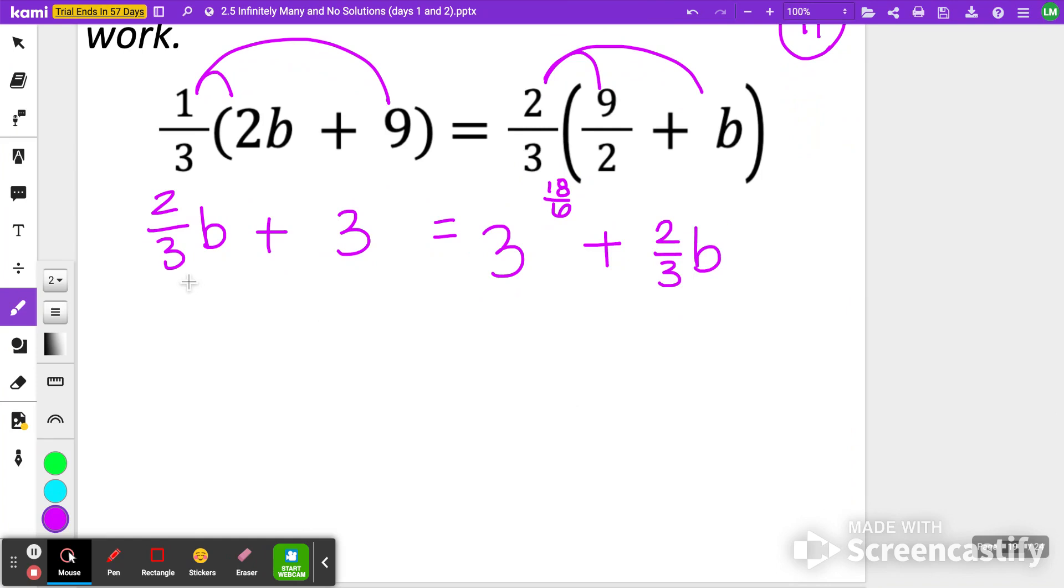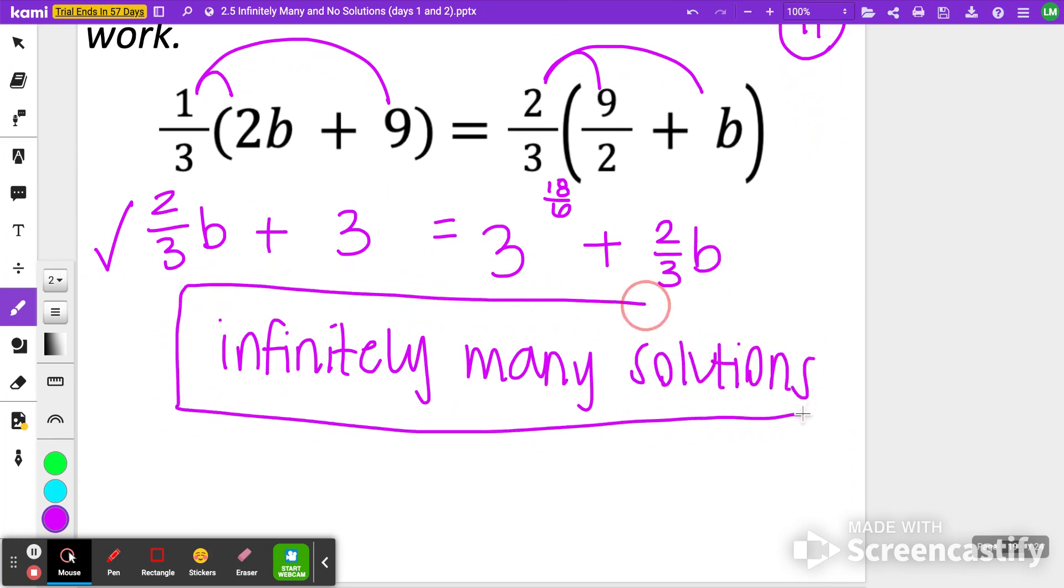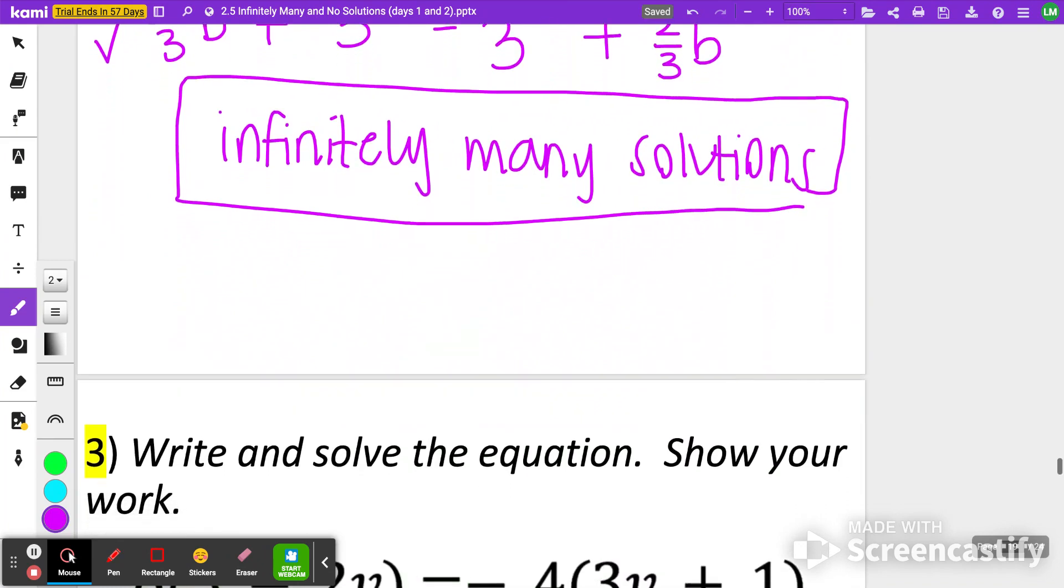If you look at your equation now, it's pretty much the same thing. 2 thirds b plus 3 is equal to 3 plus 2 thirds b. So I'm going to stop right there because this is a true statement or a true equation. So my answer for here would be infinitely many solutions. I didn't even have to go any further than that. I just simplified my equation to where both sides of the equation were equal to one another.